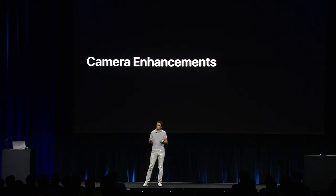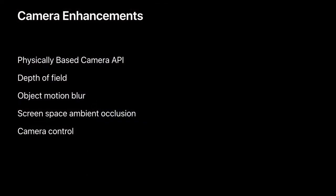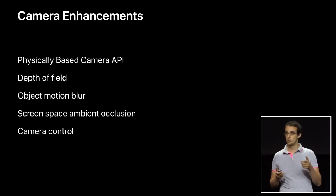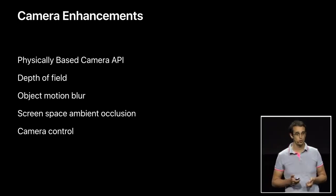We improved our camera API in this release to both simplify this problem and also improve the rendering quality. We are transitioning to a physically-based camera API, and we leveraged this new API to implement a physically-plausible depth of field. We also improved our motion blur and added support for screen-space ambient occlusion. And I will talk next about the new APIs we have added to simplify the control of cameras.